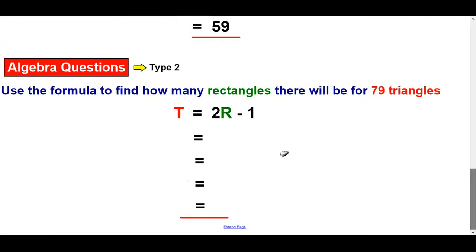Okay, other way around. Use the formula to find how many rectangles there will be for 79 triangles. So I know that's 79. And I've got... Well, it should be 2R.